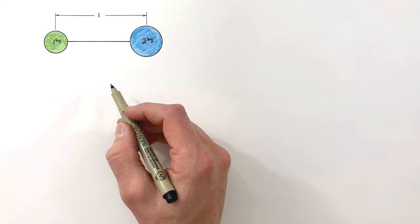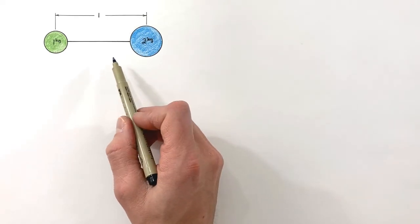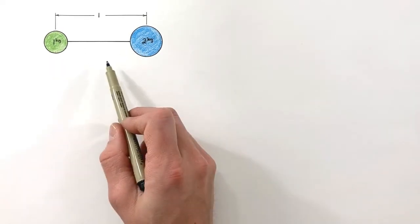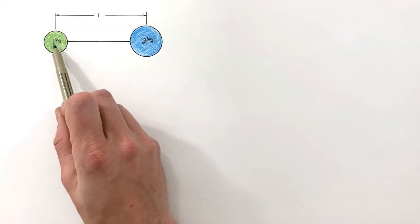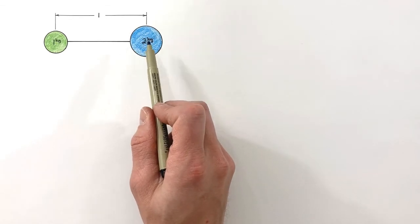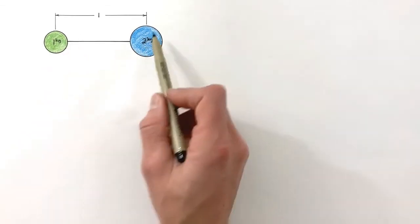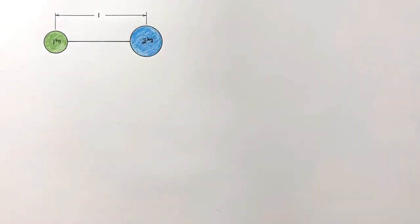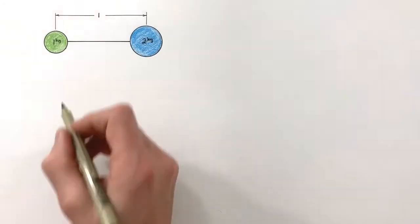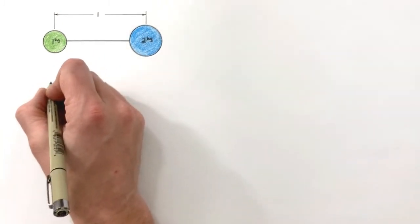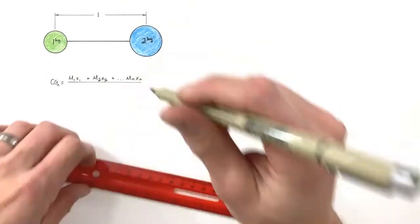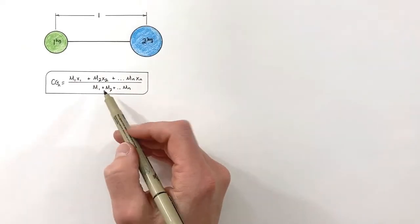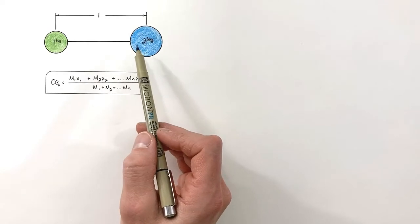In order to do this, first we're going to need to find where the position of center of gravity is for this particular assembly. What I have here is a one kilogram point mass and a two kilogram point mass. We're going to treat them as point masses for simplicity's sake. So using our equation for center of gravity, we can go through and find the center of gravity for this system.